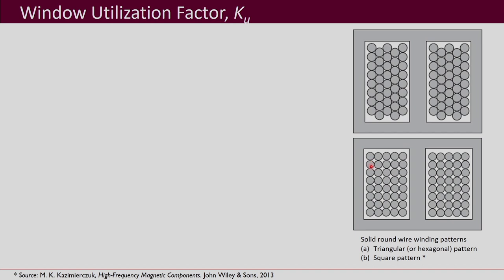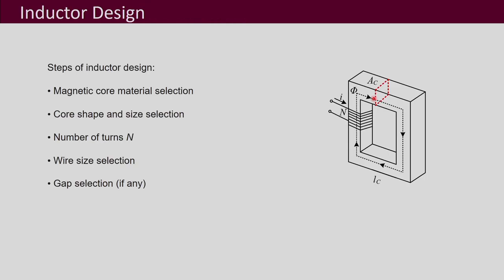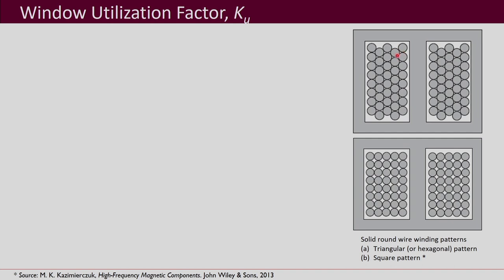For designing magnetics, one important thing you should know is the window utilization factor. The opening or free space in the core is called the window, and we wind conductors through this window. When placing wires — typically solid round wires — they can be arranged in a hexagonal pattern, where two conductors are placed side by side with another conductor in between.